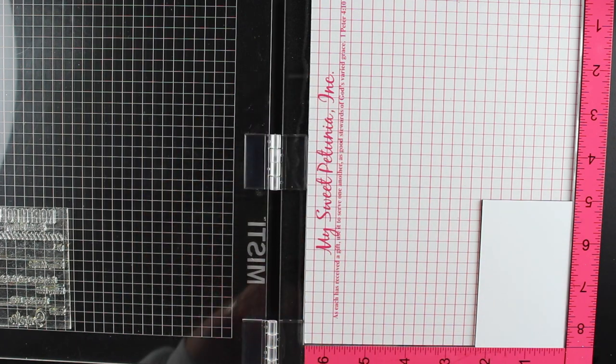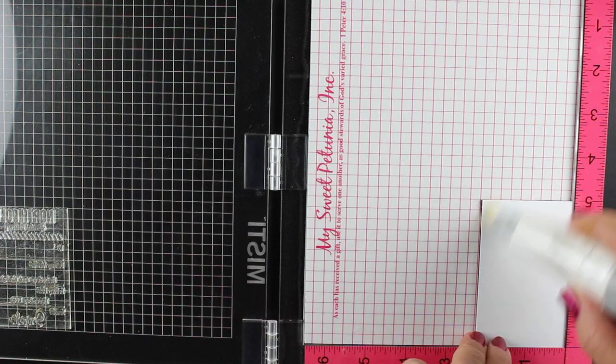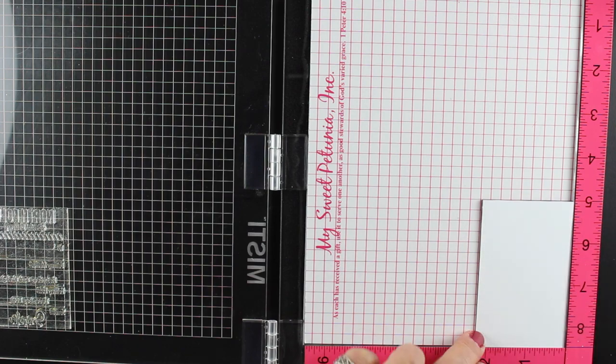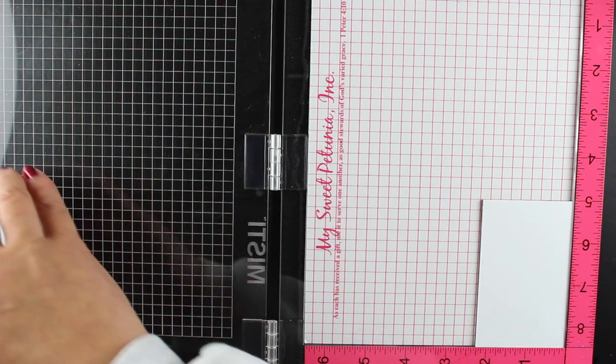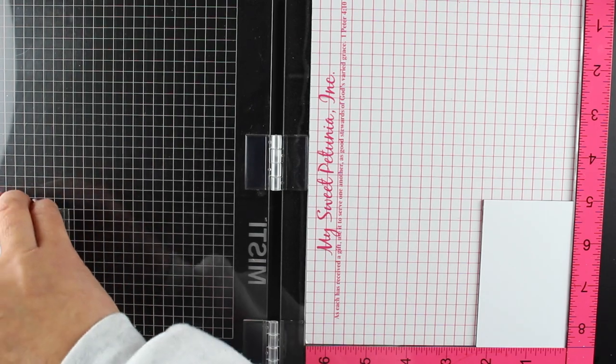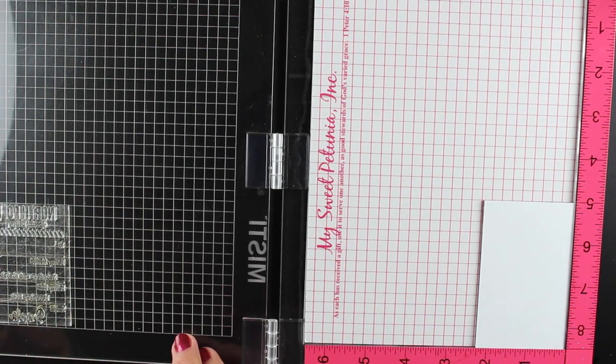So I'm gonna use my de-staticifier. I never know what to call this thing—it's an embossing de-static thing because it helps the embossing powder not to stick where you don't want it to stick. So whatever that thing is, it's gonna be linked with the rest of the supplies in the description down below.